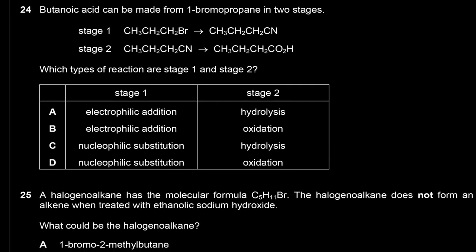Butanoic acid can be made from 1-bromopropane in two stages. Stage one: 1-bromopropane is converted to butanenitrile — bromine is substituted by CN. Halogenoalkanes undergo nucleophilic substitution. Stage two: butanenitrile is converted to a carboxylic acid — that's a hydrolysis reaction. The answer is C.